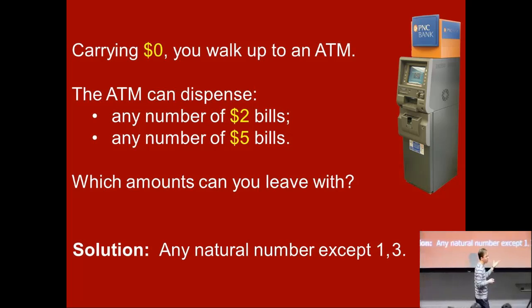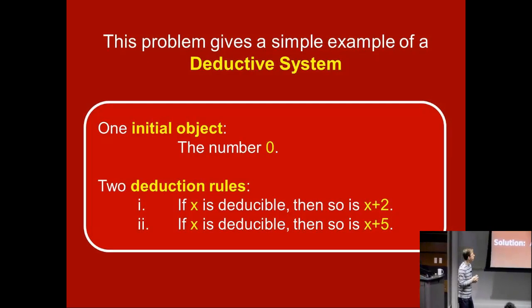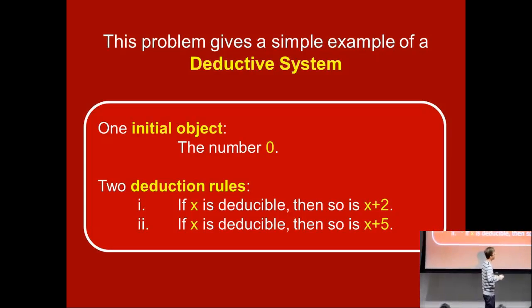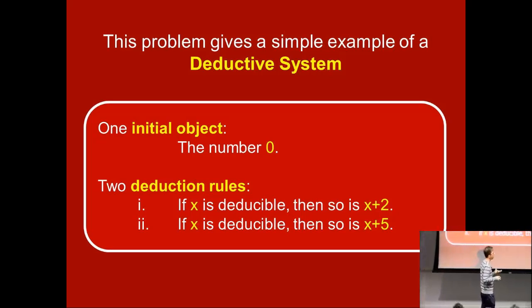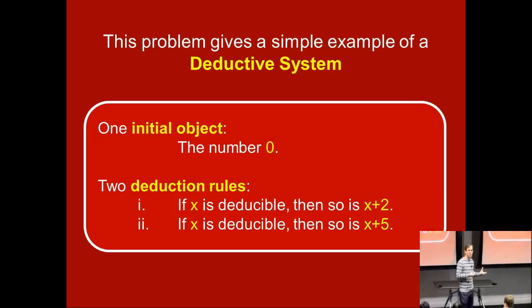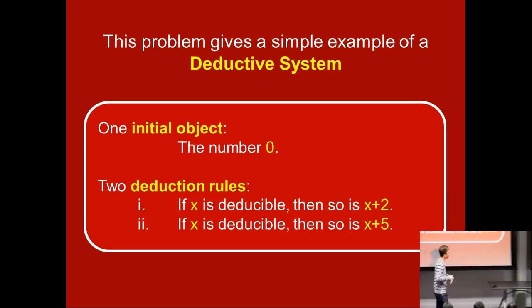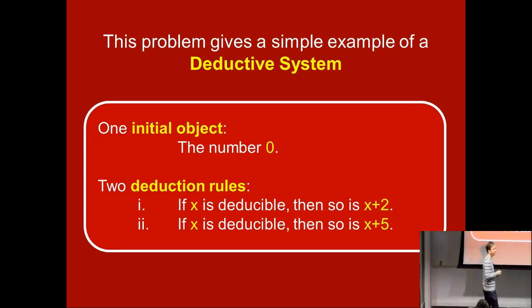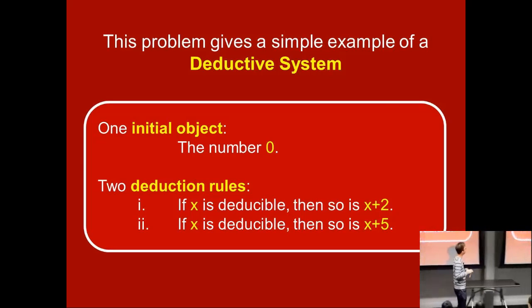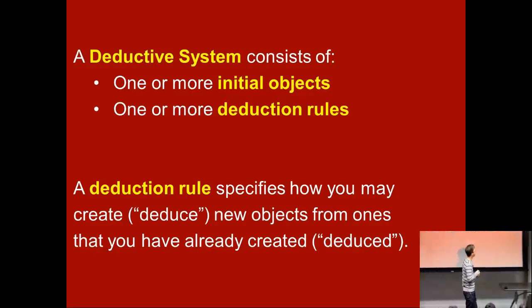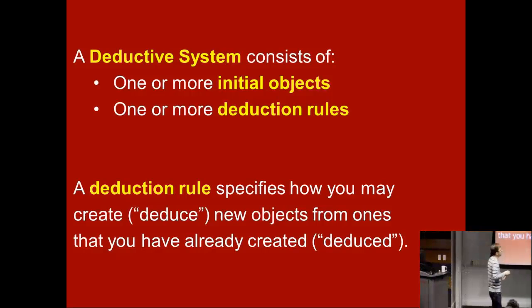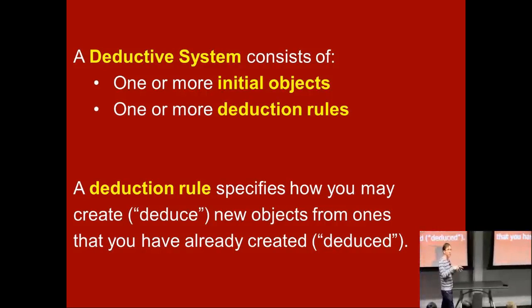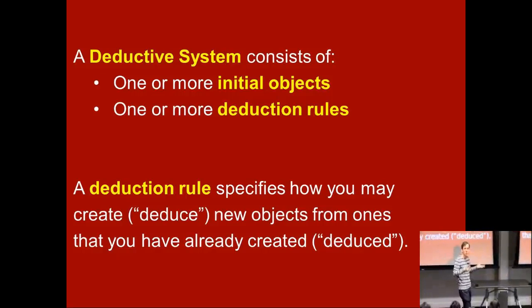I raise this example not because of its arithmetic nature, but because it's an example of a simple problem that can be modeled with a deductive system. We have an initial object — the number 0 — and two deduction rules: if x is deducible, you can also get x plus 2 or x plus 5. A deductive system has some initial objects and deduction rules that tell you how to generate new objects from ones you've already gotten.